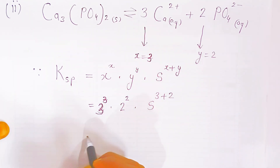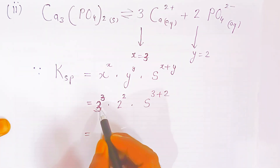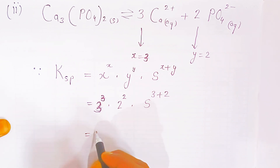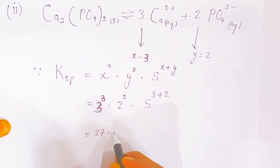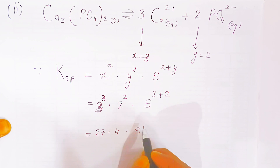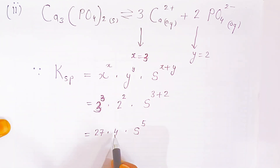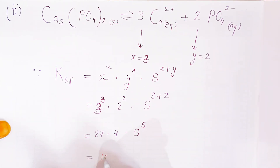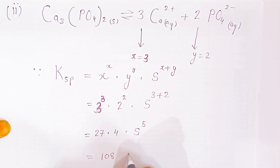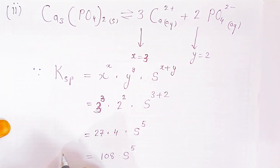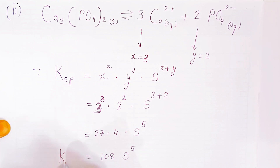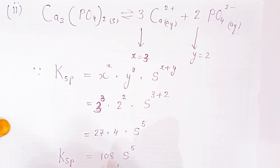Computing: 3³ = 27 and 2² = 4, so 27 × 4 = 108. S is raised to the power 5. Therefore Ksp = 108 · S⁵.